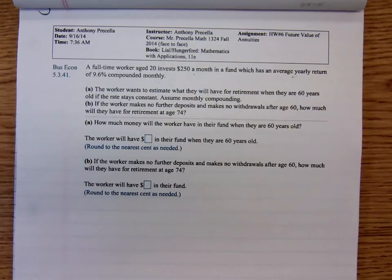Part B: if the worker makes no further deposits and makes no withdrawals after age 60, how much will they have for retirement at age 74?